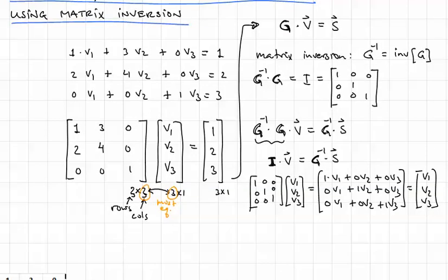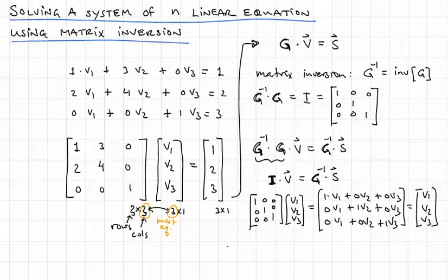And therefore, V can be found by simply determining what the inverse of G is and then multiplying that by S.